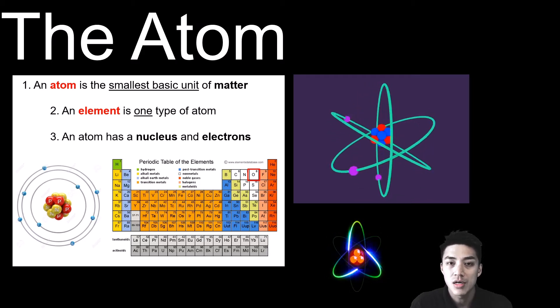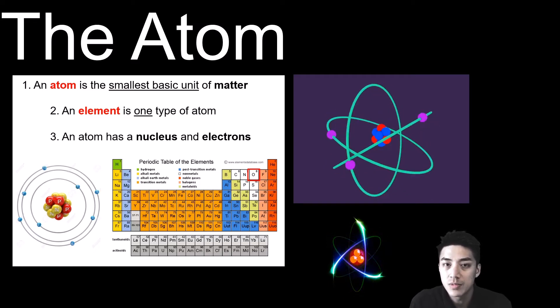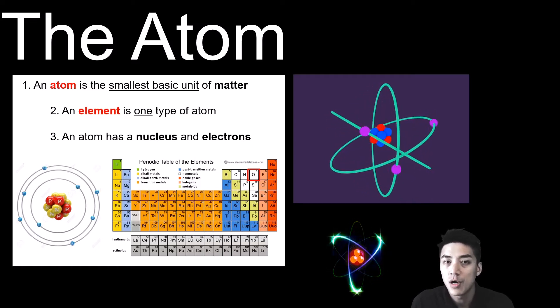And around the nucleus, you have electrons which orbit in different energy levels. And it's the interactions of an atom's electrons that determines what kind of molecule it makes.